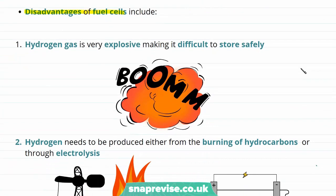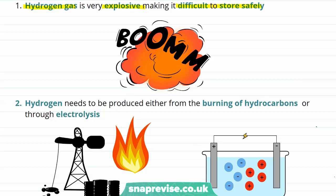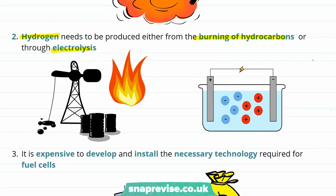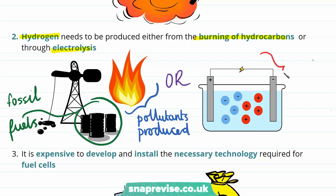However there are some downsides to using hydrogen-oxygen fuel cells. Hydrogen gas is very explosive, making it very difficult to store safely — especially as the fuel cell itself produces heat, which increases the risk of explosion. Secondly, fuel cells require a constant supply of hydrogen, which needs to be produced either from burning hydrocarbons or through electrolysis. The hydrocarbons often come from fossil fuels, which are a finite resource, and burning them produces pollutants. Alternatively, electrolysis can produce hydrogen, but this process requires a lot of energy, the production of which is also likely to come from burning fossil fuels — so the same problems apply.